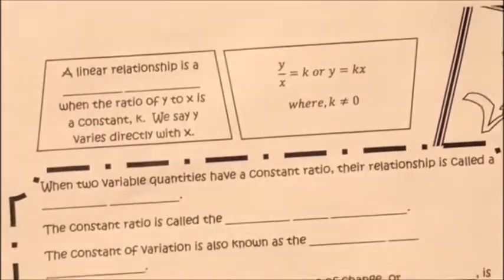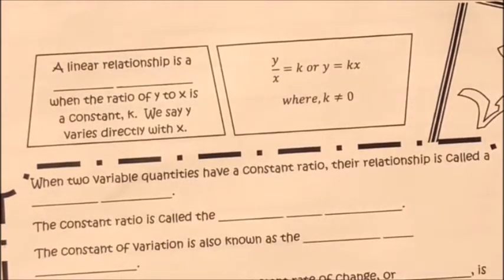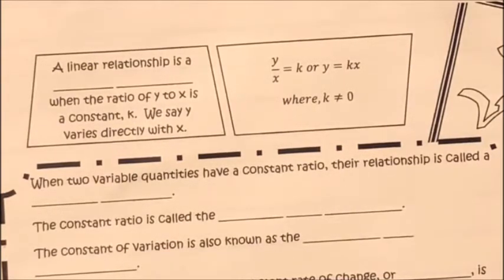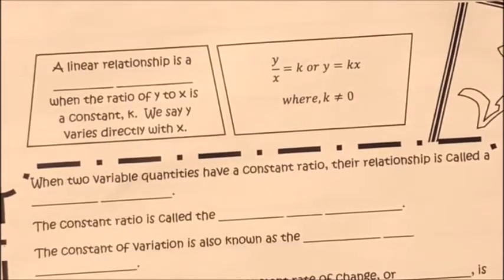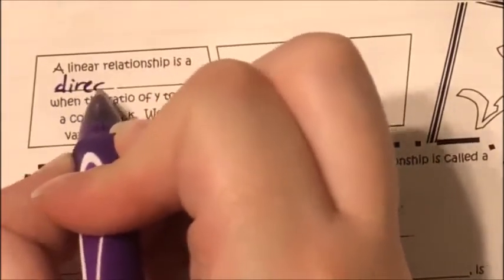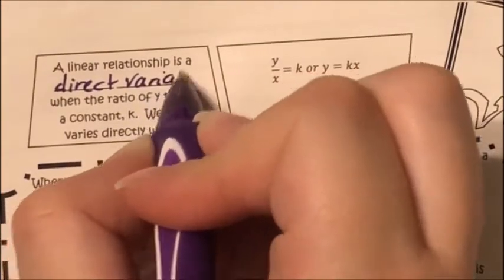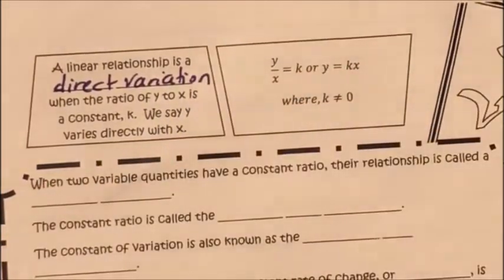The first thing I want to look at is actually a definition. It says a linear relationship is a blank blank when the ratio of y to x is a constant k. We say y varies directly with x. In those two blanks, you're going to write direct variation.